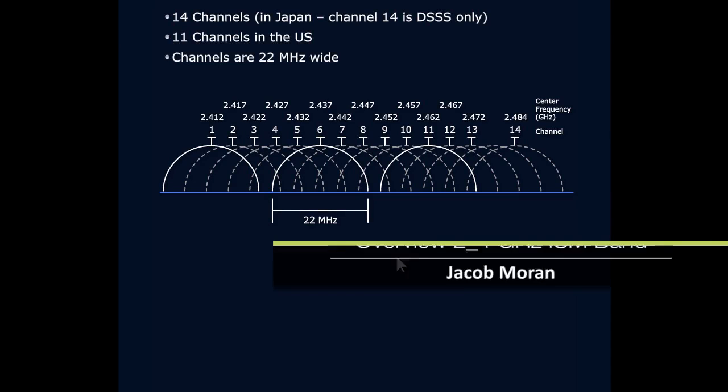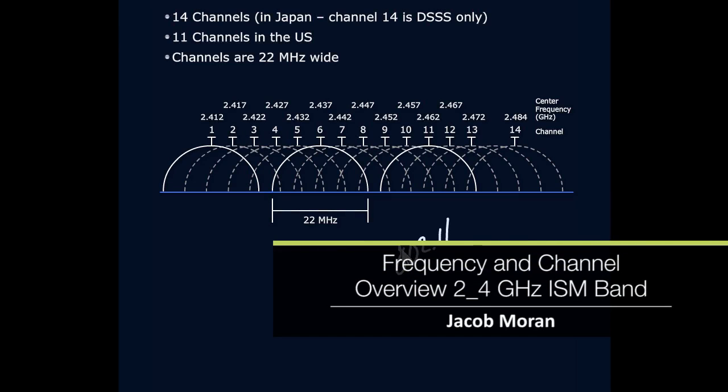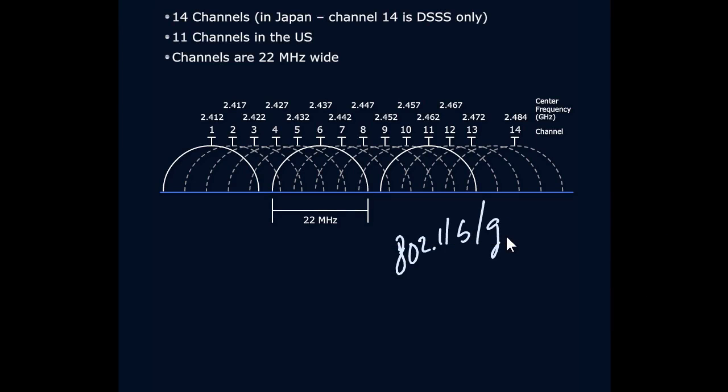If you're using 802.11 B or G, you are probably very familiar with the 2.4 gigahertz range. This is even usable in backwards compatibility with 802.11n. So what do we see going on at 2.4 gigahertz?